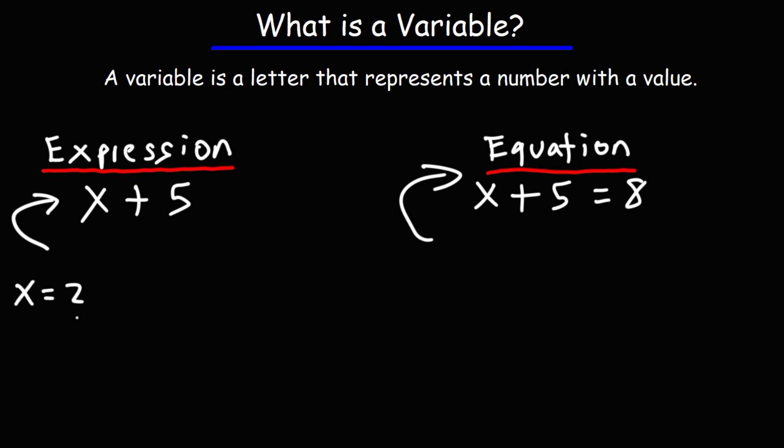In this example, x could be 2, it could be 7, x can be negative 4. For each of these values, the value of the entire expression will be different. So if x is 2, the value of that expression will be 2 plus 5, which is 7.